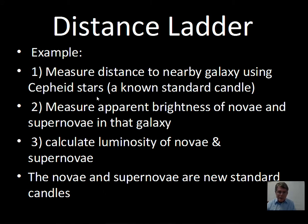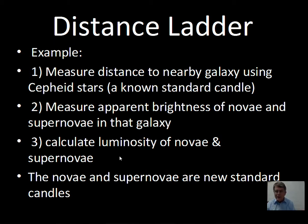An example: use the Cepheid stars, assuming they've been calibrated as a known standard candle. Measure the period of the Cepheid variation — that gives luminosity from the calibration of these stars — and then the distance to the galaxy can be determined. Astronomers then measure the apparent brightness of novae and supernovae in that galaxy. The distance is known through the Cepheid stars, the apparent brightness is measured at the telescope, and astronomers can calculate the luminosity for novae and supernovae. These become the new standard candle that can go further out. The Type 1a supernovae are fairly bright.